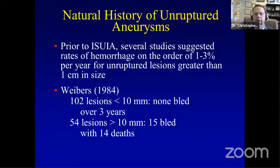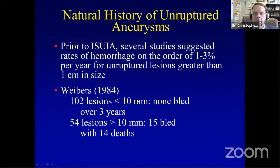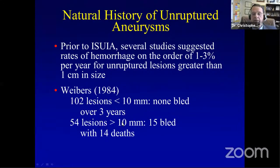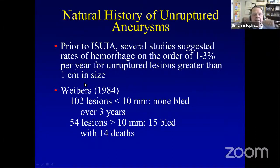Prior to the ISUIA trial, several studies suggested hemorrhage rates of 1–3% per year for unruptured aneurysms greater than a centimeter. David Wiebers, at the Mayo Clinic, published a 1984 paper with 102 lesions smaller than 10 millimeters — none of which bled over three years — and 54 lesions greater than 10 millimeters, of which 15 bled over the same interval, with 14 deaths. This led Wiebers to design the International Study of Unruptured Aneurysms to examine the effect of size on rupture.